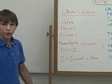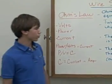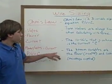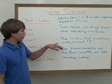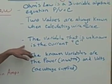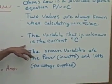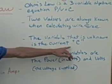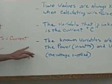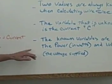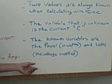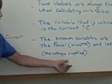The current is going to give you your answer in amps. The variable that is always unknown is the current, which is represented as C. The known variables, as I said before, are power in watts and the volts supplied.